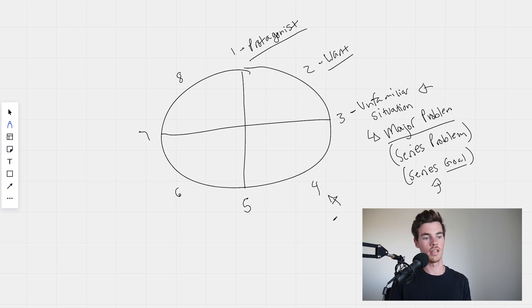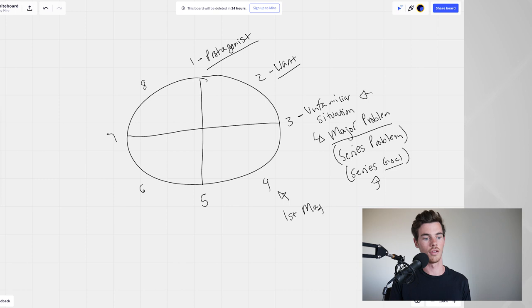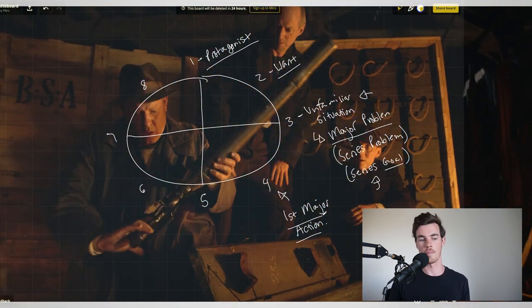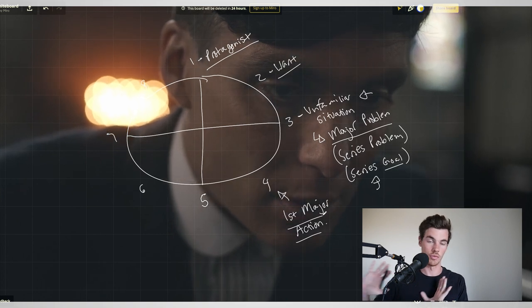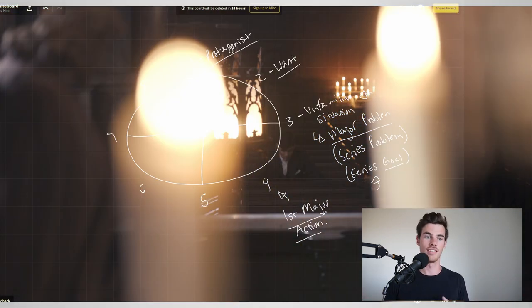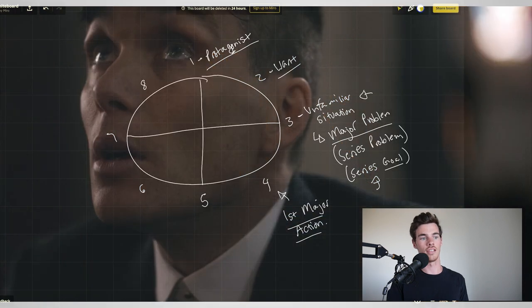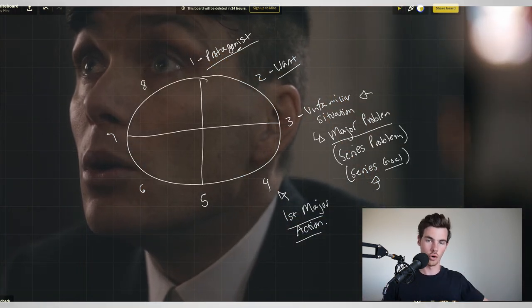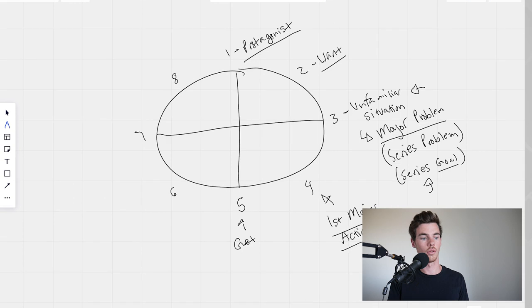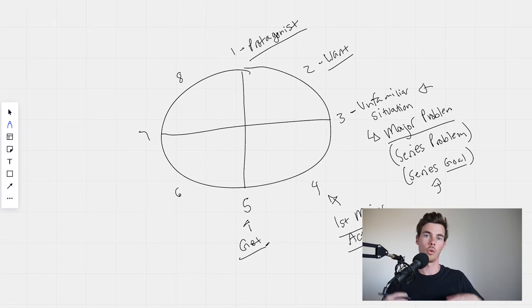Now at point four, this is going to be the first major action of your protagonist. In Thomas Shelby's case, he finds a shipment of guns and rather than just dealing with it, he decides to use it as a way to increase his family's power — that is his first major action. This is the protagonist starting to step into the new world and the new situation they are going to be in. At point five, they are going to get what they want in some small way. In the pilot episode, they take their first major action to get that thing, and they get it.